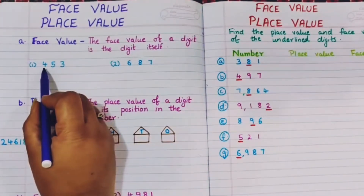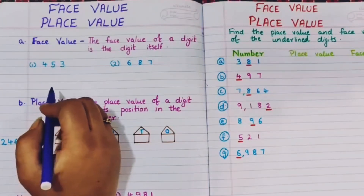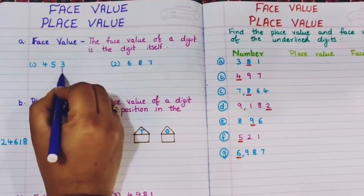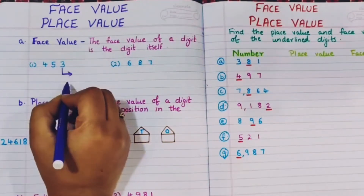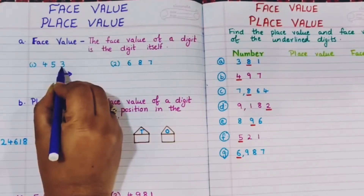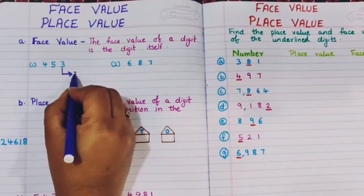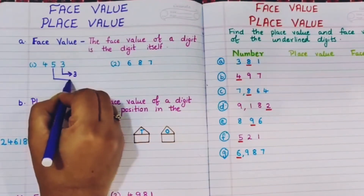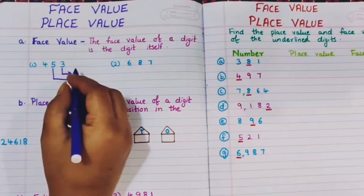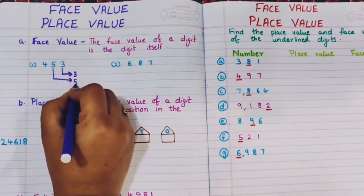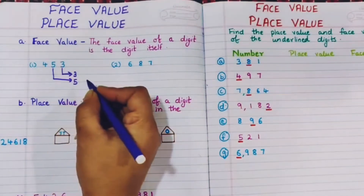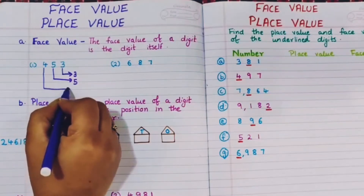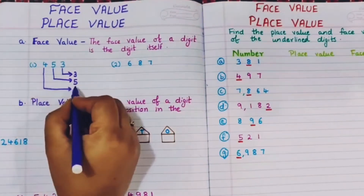Let's see with one example. Here I have the number 453. The face value of 3 is 3 itself. The face value of 5 is 5 itself. It is very easy.